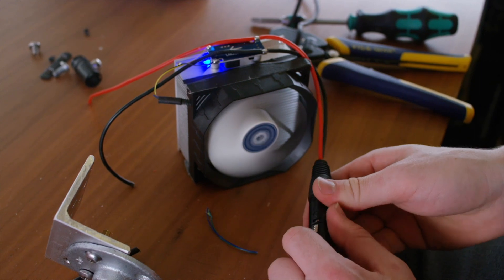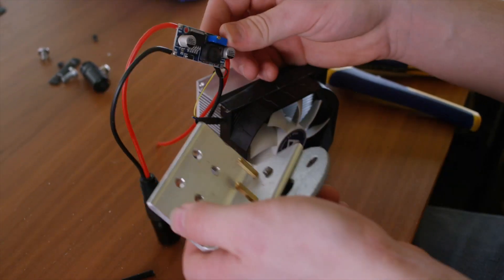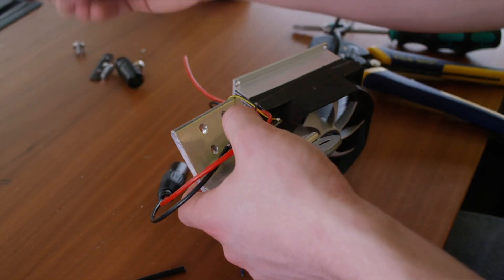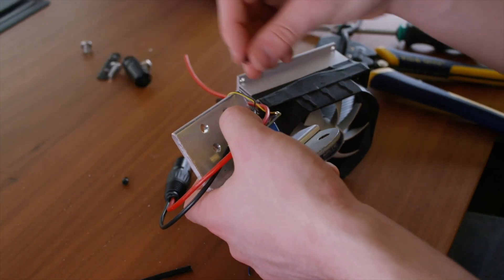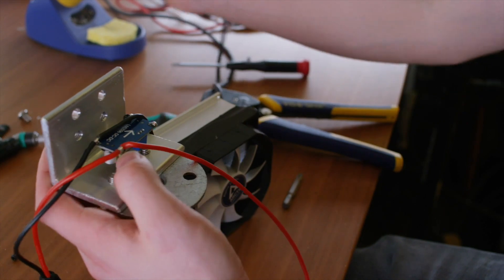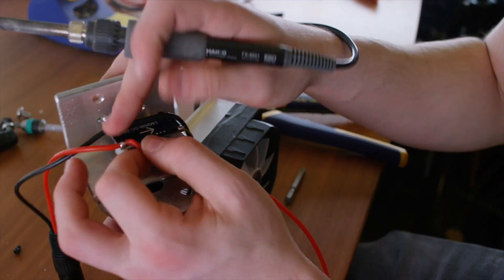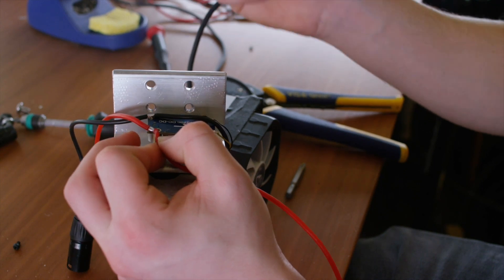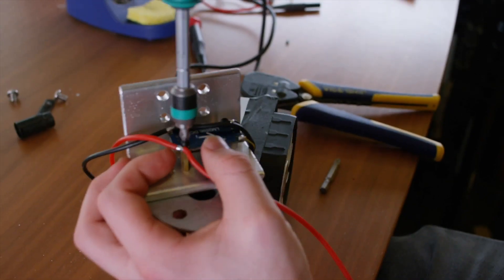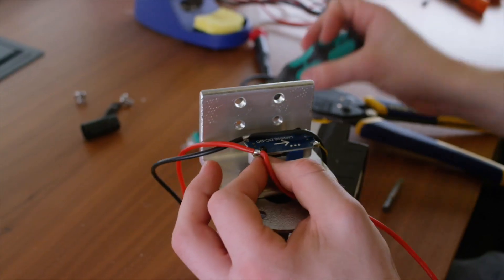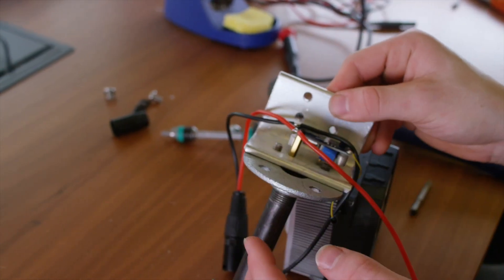Now I'm going to go ahead and mount the voltage regulator upside down onto these mounting standoffs using the two final M3 screws. I have to modify the solder joint a little just to get access to the screw. And when you're done mounting the voltage regulator, it should look something like this.